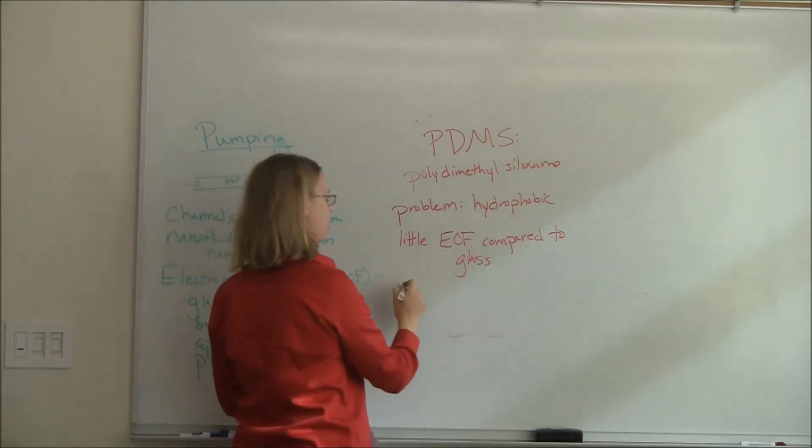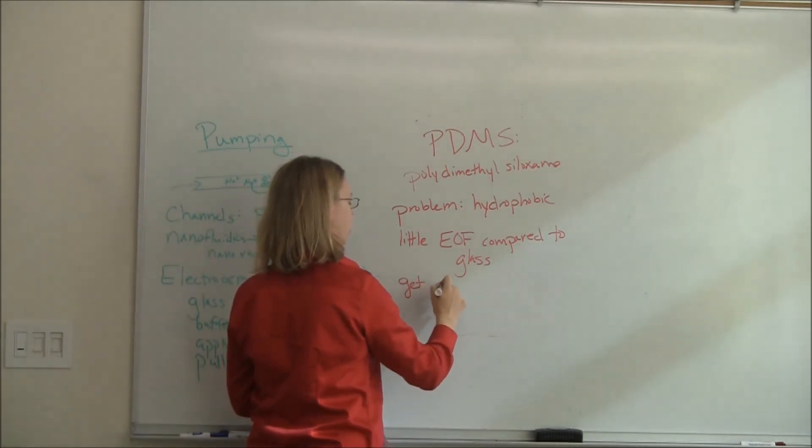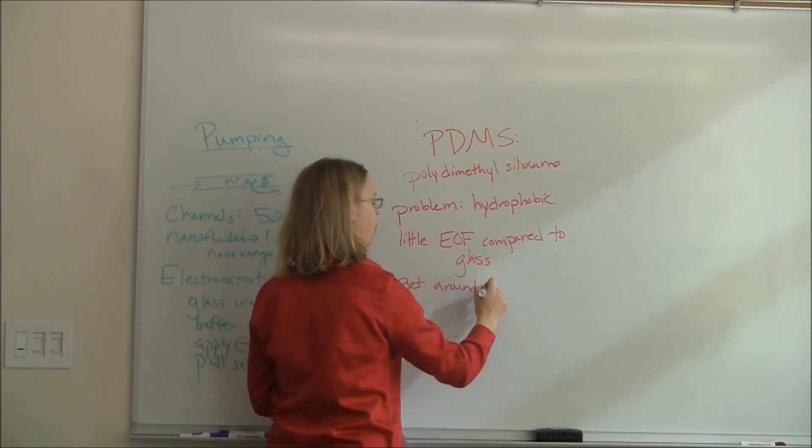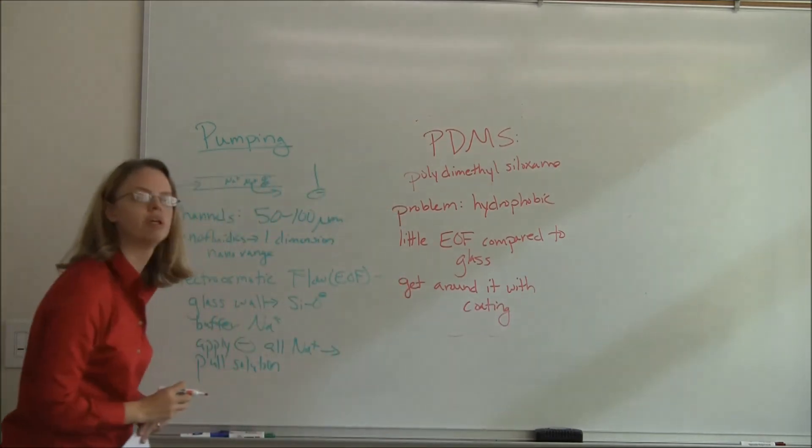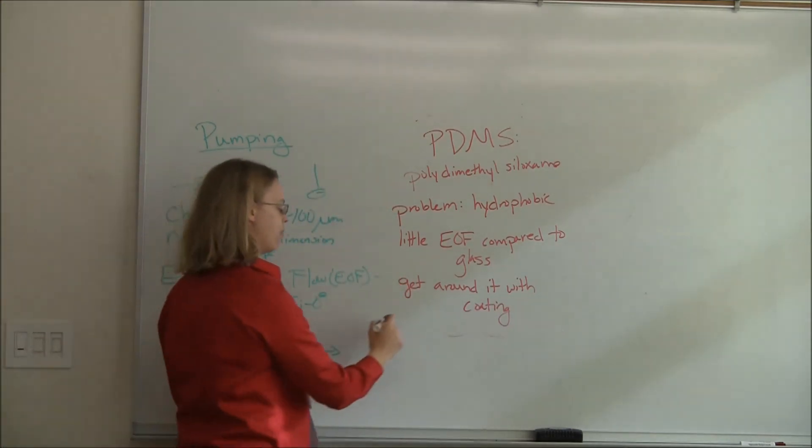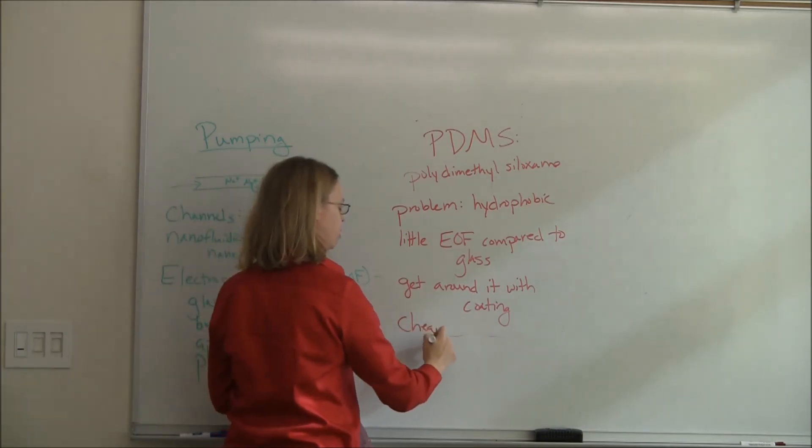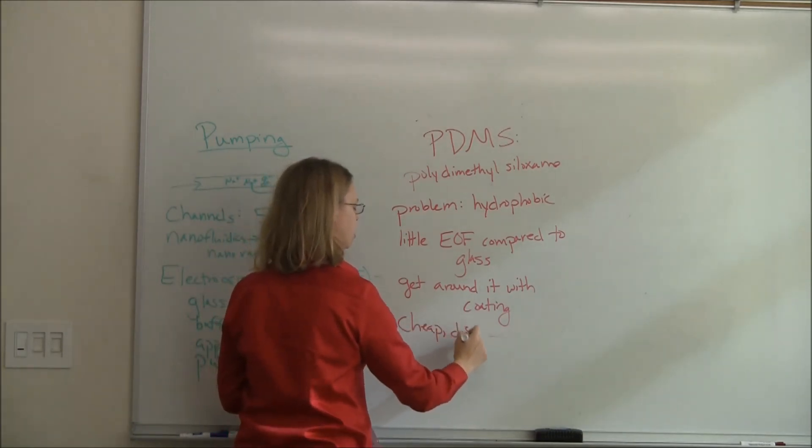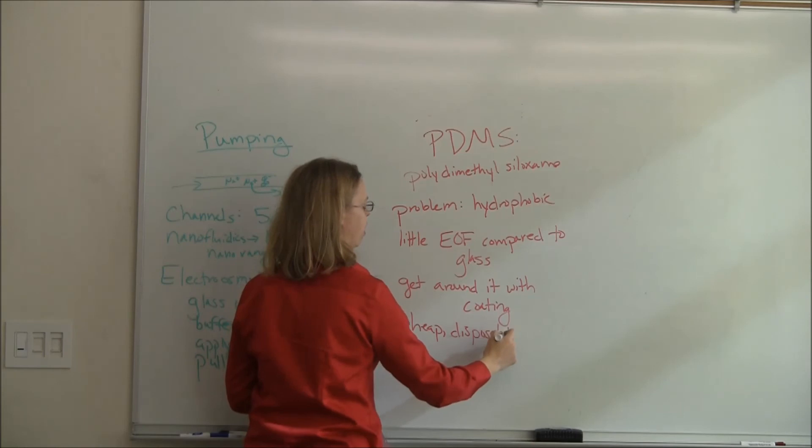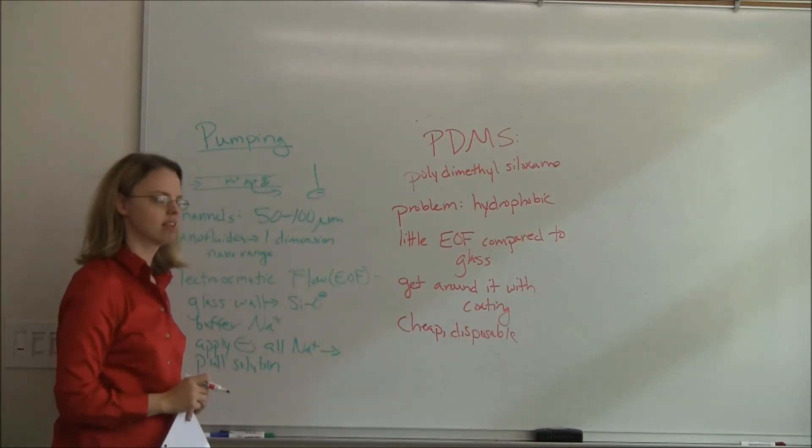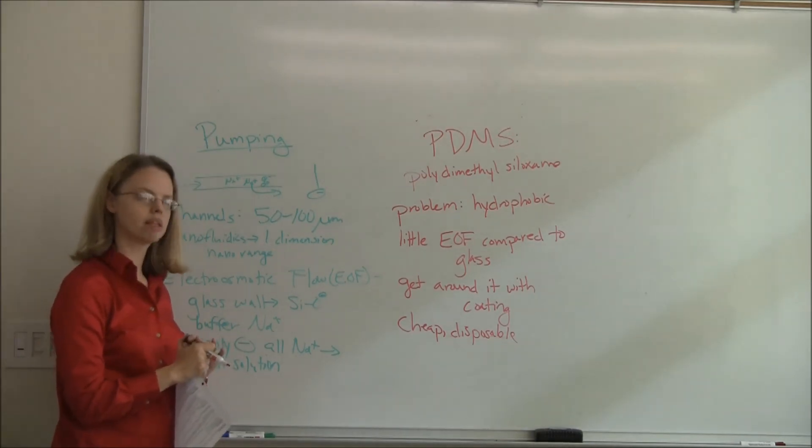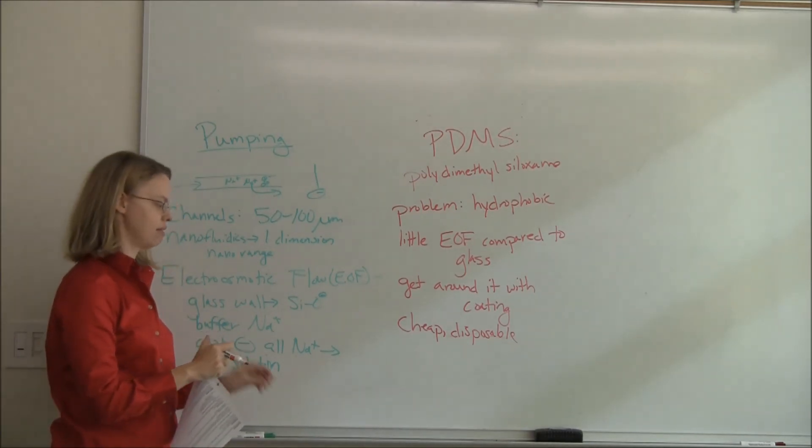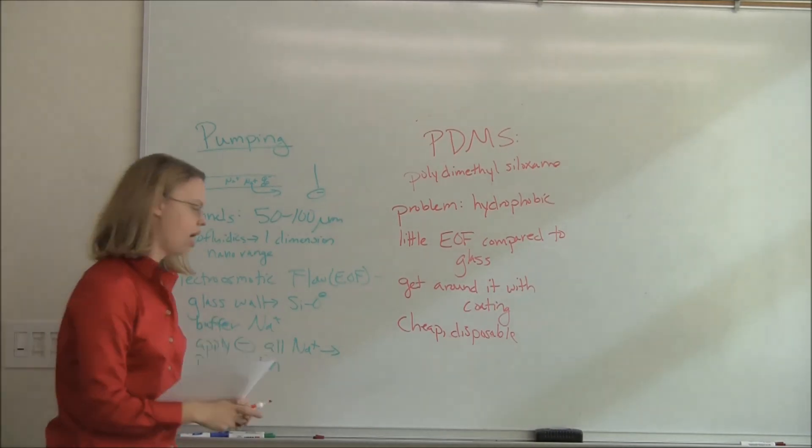But if you want to get around that, you can sometimes get around it by putting a coating onto your PDMS chip. PDMS they like, though, because it's cheap and it's pretty disposable. It's plastic. So if you want to make a device that's easy to use in a clinical setting, PDMS ends up being cheap and fairly disposable.